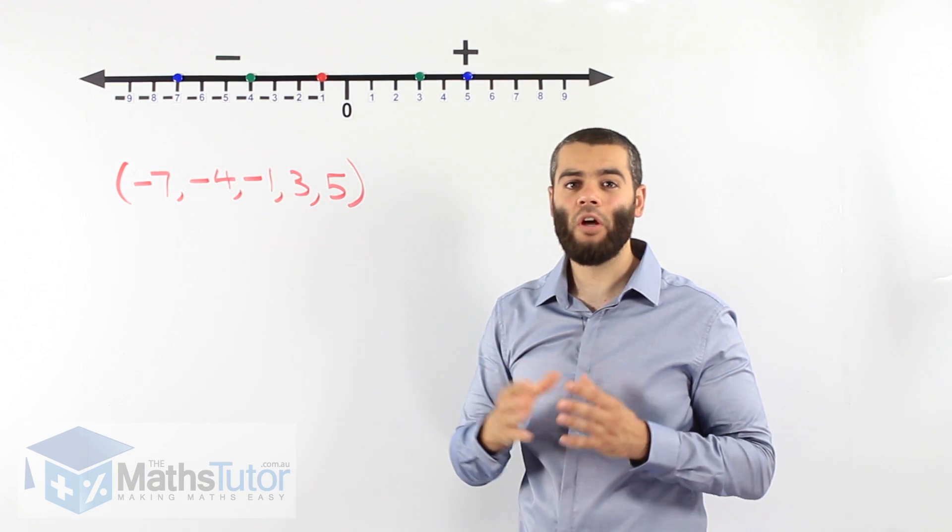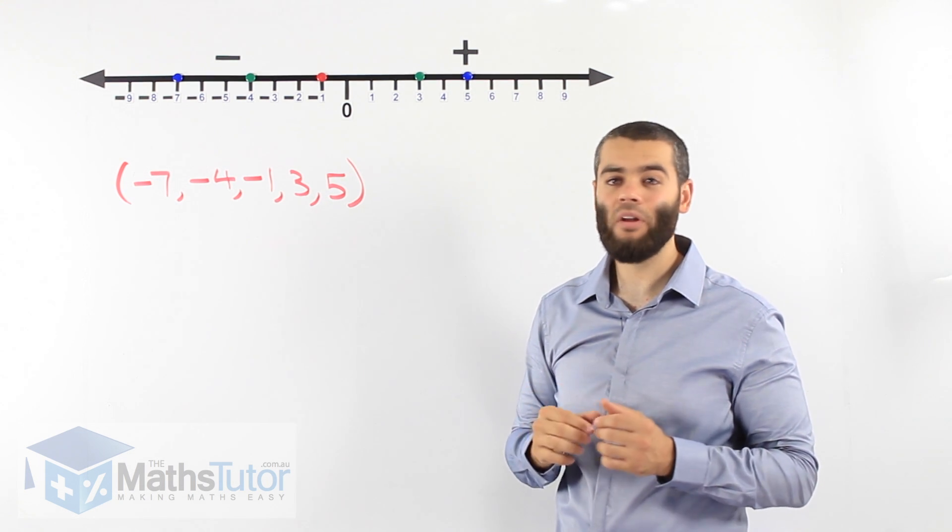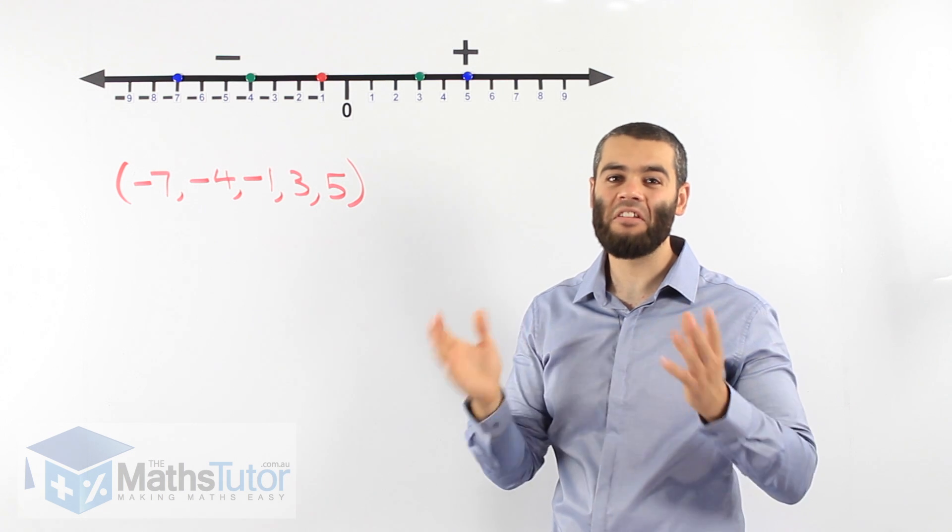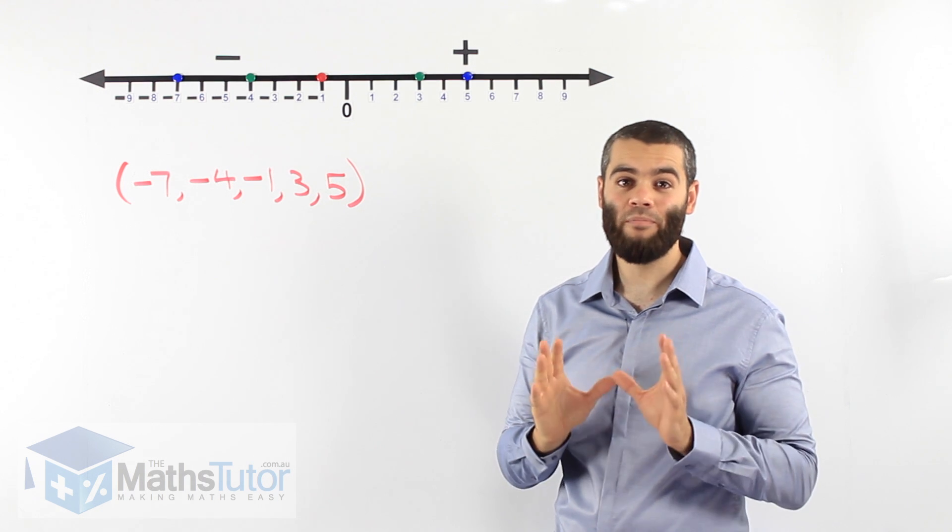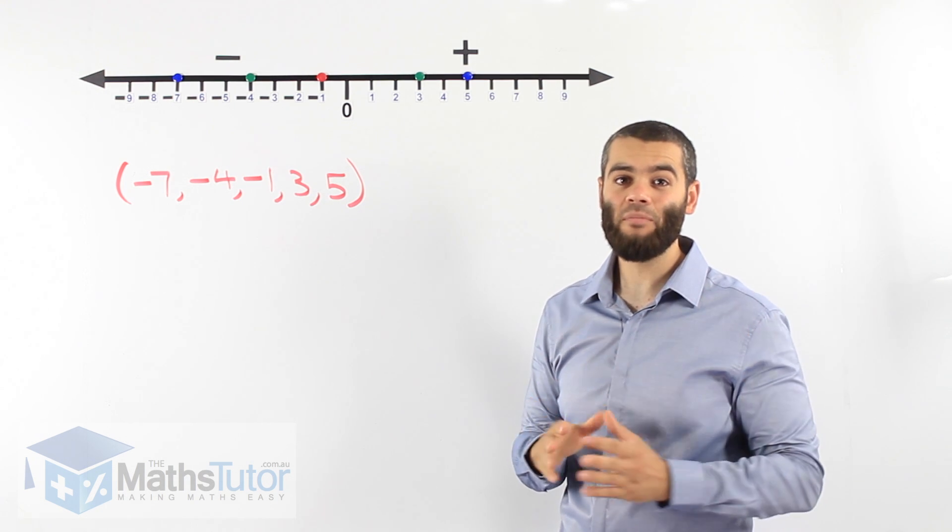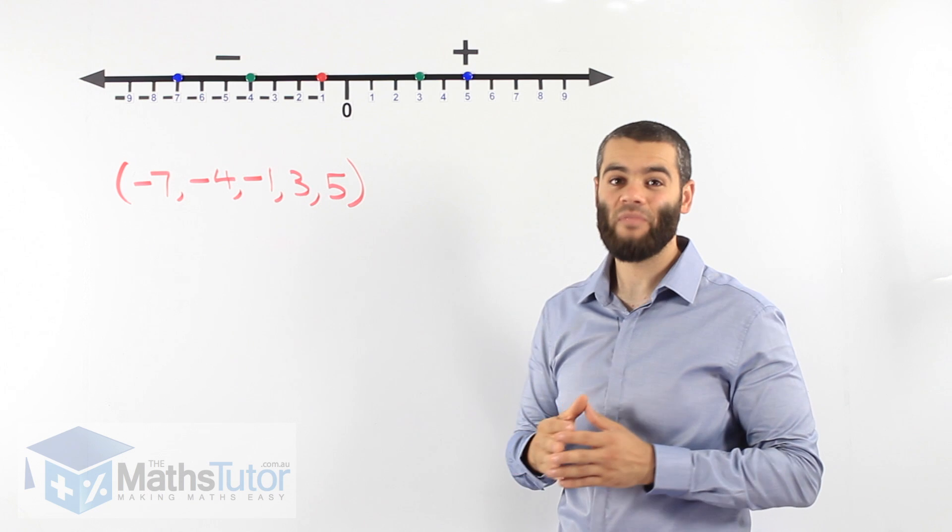So when we're asked to plot or graph numbers on a number line, that's exactly what we do. It's as simple as that. However, it's critical that we don't put the point on the wrong number. We can distinguish between negative numbers and positive numbers as you can see there.